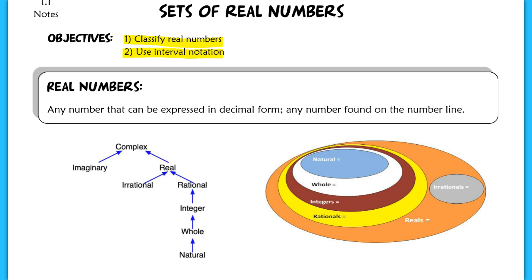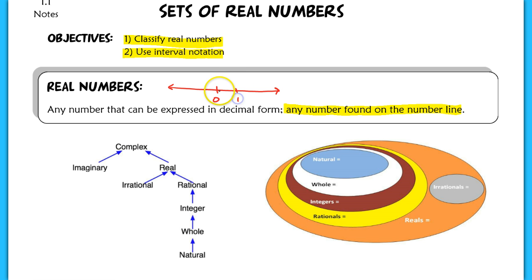A real number is any number that can be expressed in decimal form — any number that can be found on the number line. So if it's a real number, you can draw it on a basic number line. That means something like 0.00006523 — that is a real number.